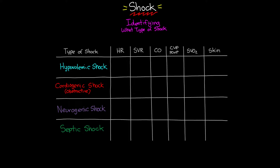When talking about each of these types of shock, we're going to look at what you would expect to see with the patient's heart rate, systemic vascular resistance, cardiac output, CVP or wedge pressure as an indication of preload, venous oxygen saturation, and finally how their skin looks and feels.